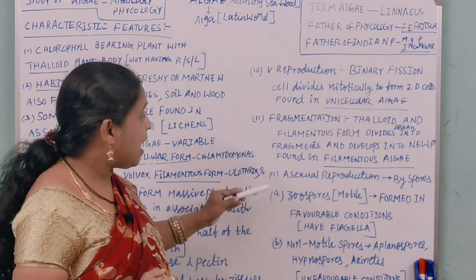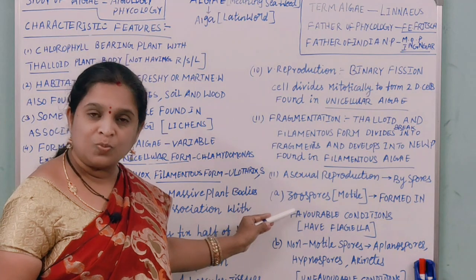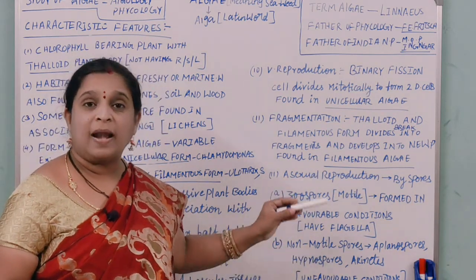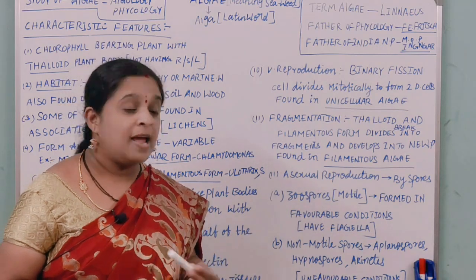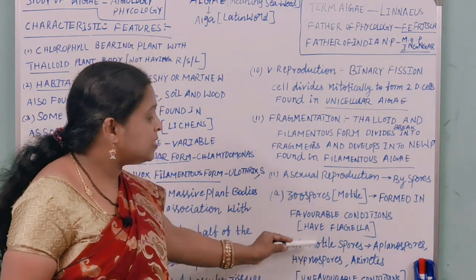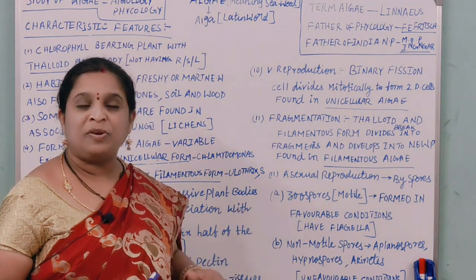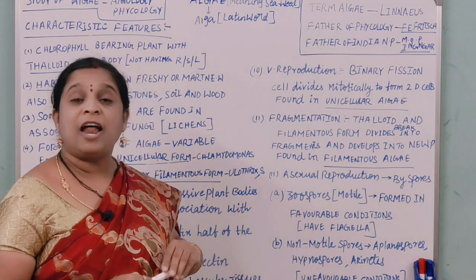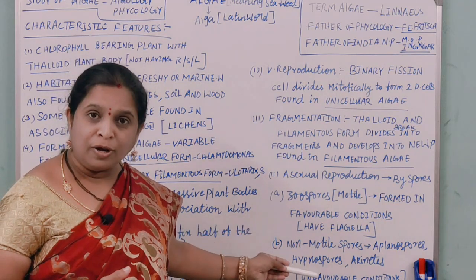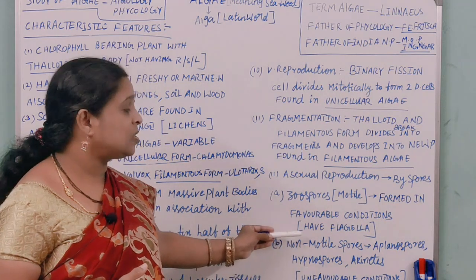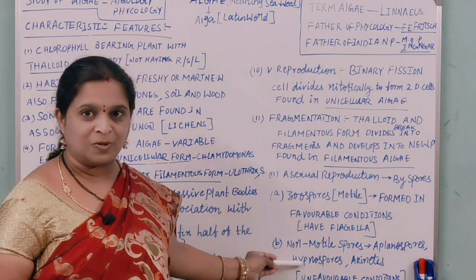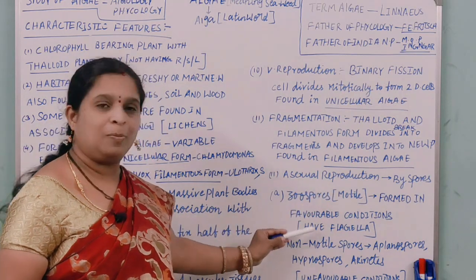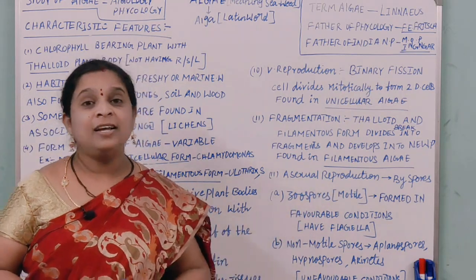Asexual reproduction in algae takes place with the help of spores. There are two types: zoospores, which are motile and formed under favorable conditions and bear flagella; and non-motile spores called aplanospores, hypnospores, and akinetes, which are formed under unfavorable conditions.